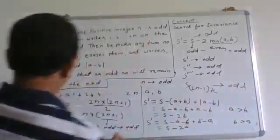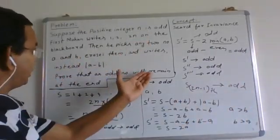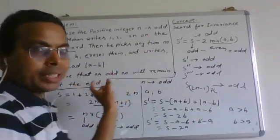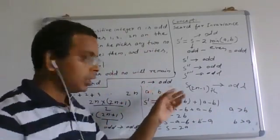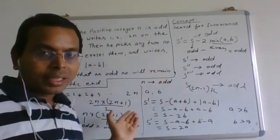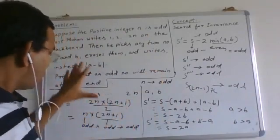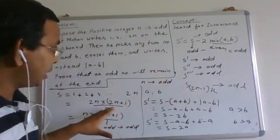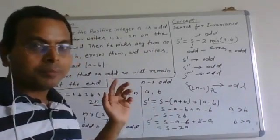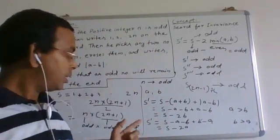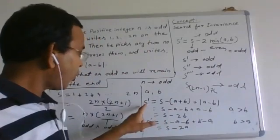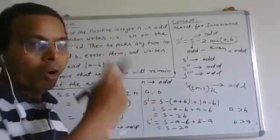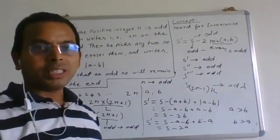Hence the result. So at the last, only one number will be remaining and that number will be odd. How we come to here? Because we found throughout this process, repeating process, what remains invariant. That is nothing but the parity of sum of these numbers remains odd. Thanks for watching.